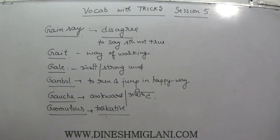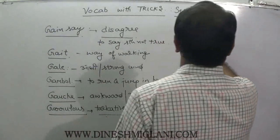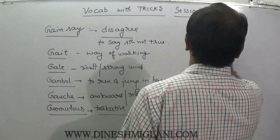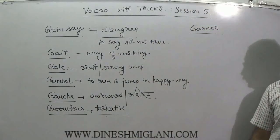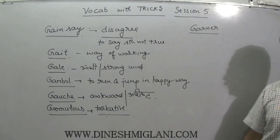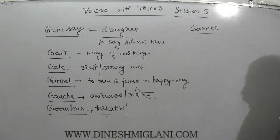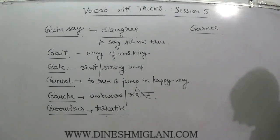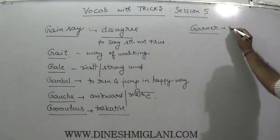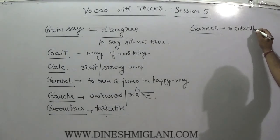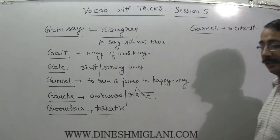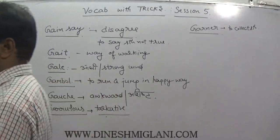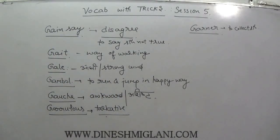Next one is garner, G-A-R-N-E-R. When I talk about garner — think of a gardener (mali). A gardener has a garden and every day he collects fruits from it. So garner means to collect. The meaning of garner is to collect something together. We associate the word garner with gardener, because a gardener collects and gathers fruits.